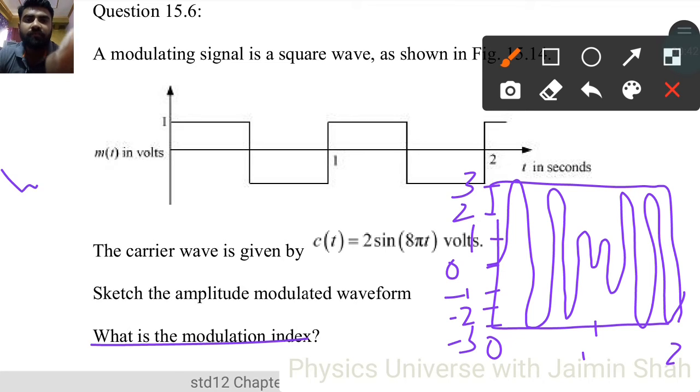Now what is the modulation index? The modulation index formula is m = Am/Ac. From this graph, Am = 1 volt and Ac = 2 volts, so m = 0.5.